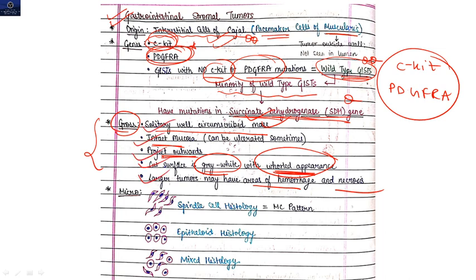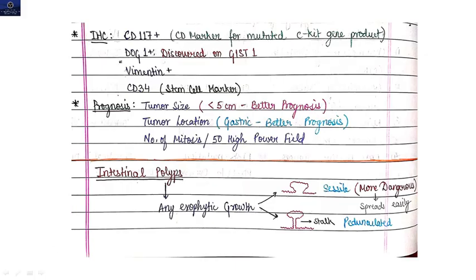In microscopy you will get three types of histology: either spindle cell histology - cells will be spindle-shaped, this is the most common pattern. Epithelioid histology - when cells will be looking like epithelium. And mixed histology - means both spindle and epithelioid.